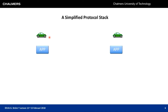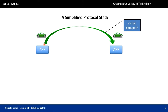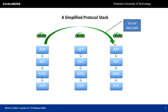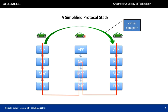We need communications between vehicles. We can think of this as a virtual data flow from the application layer at one end node to the application layer at another end node, though the physical data may take a different path through intermediate nodes, passing down through protocol layers and back up at each hop.